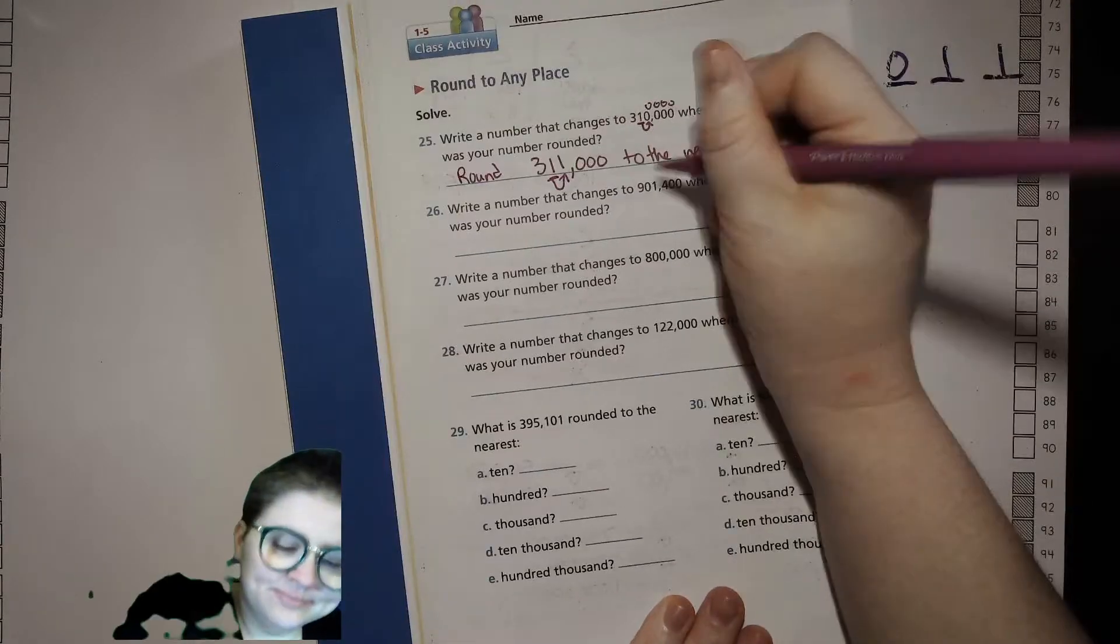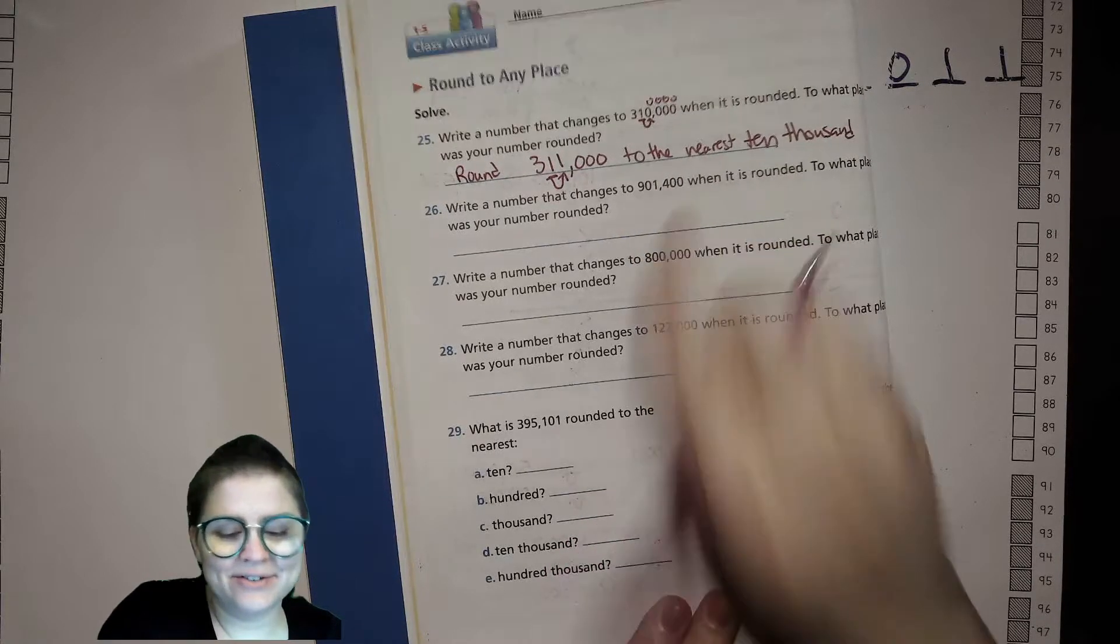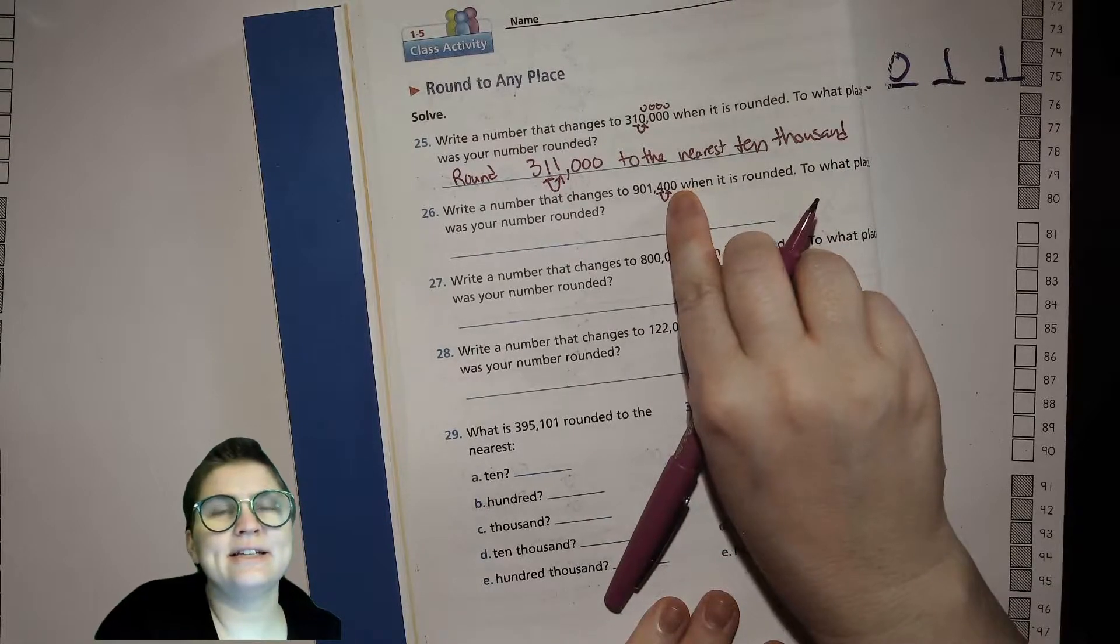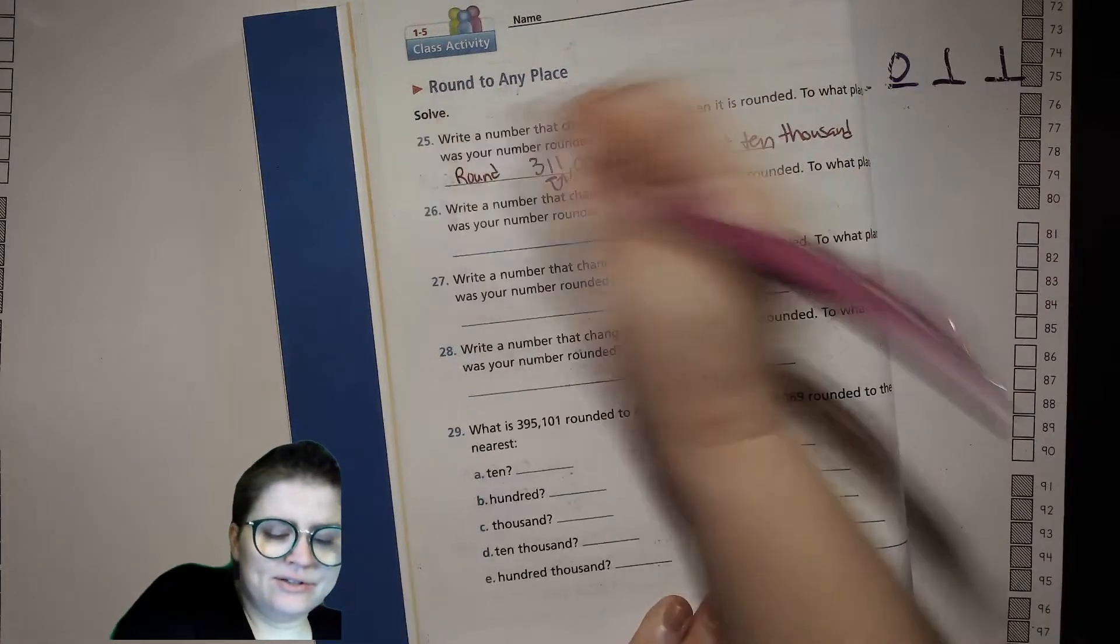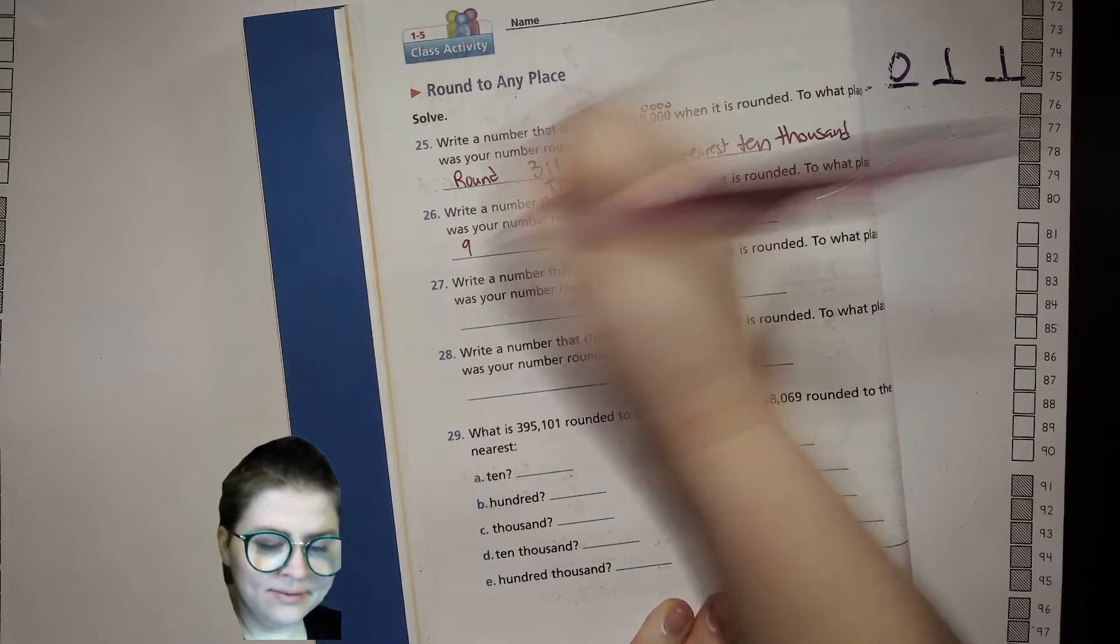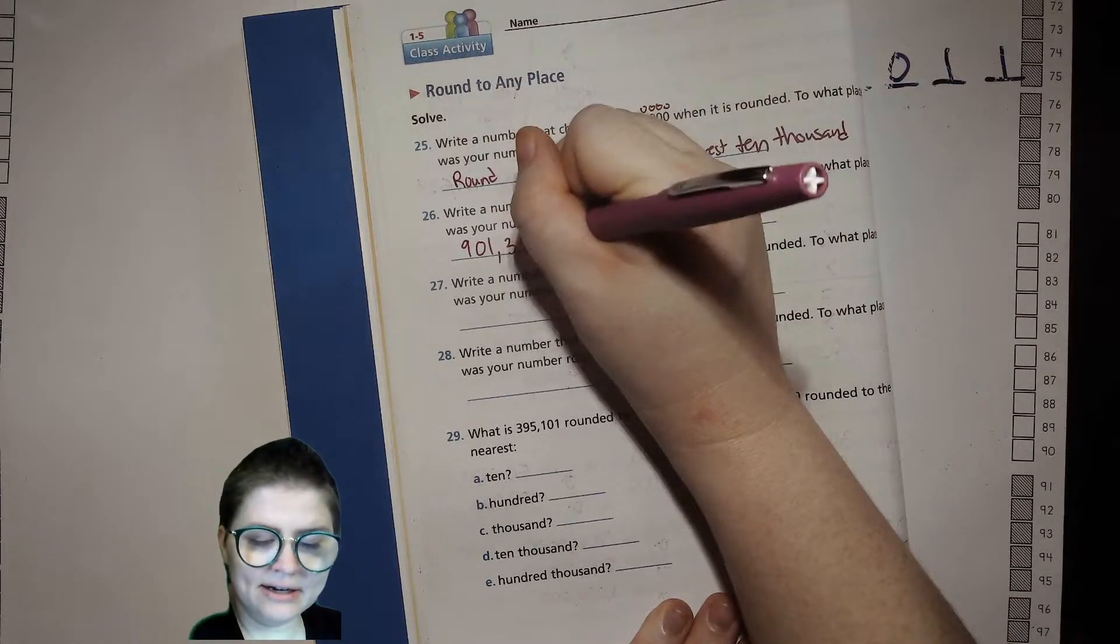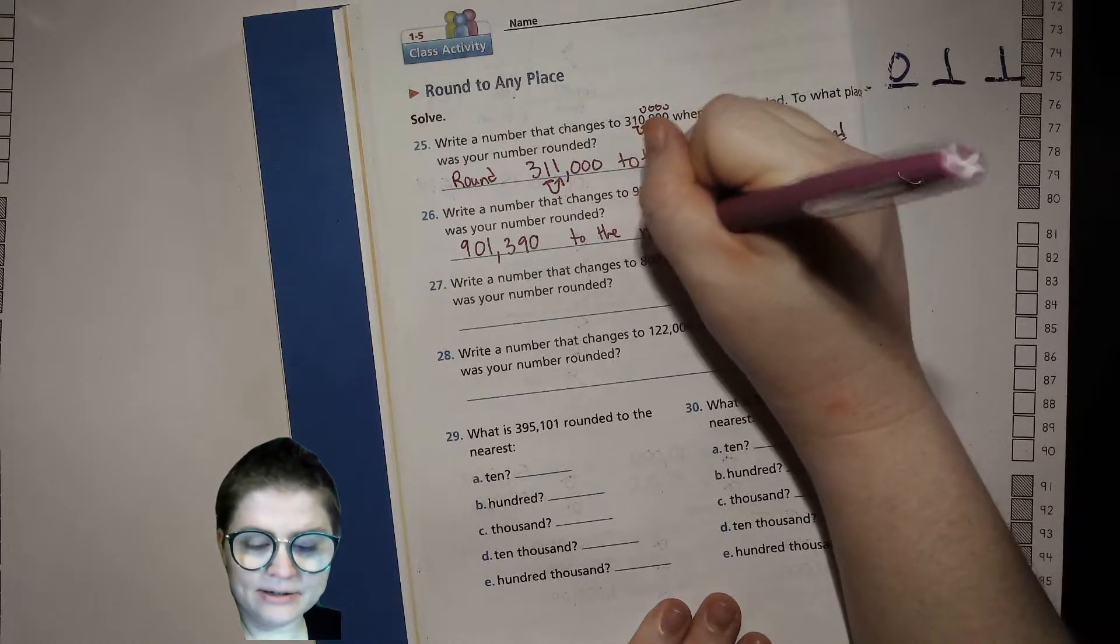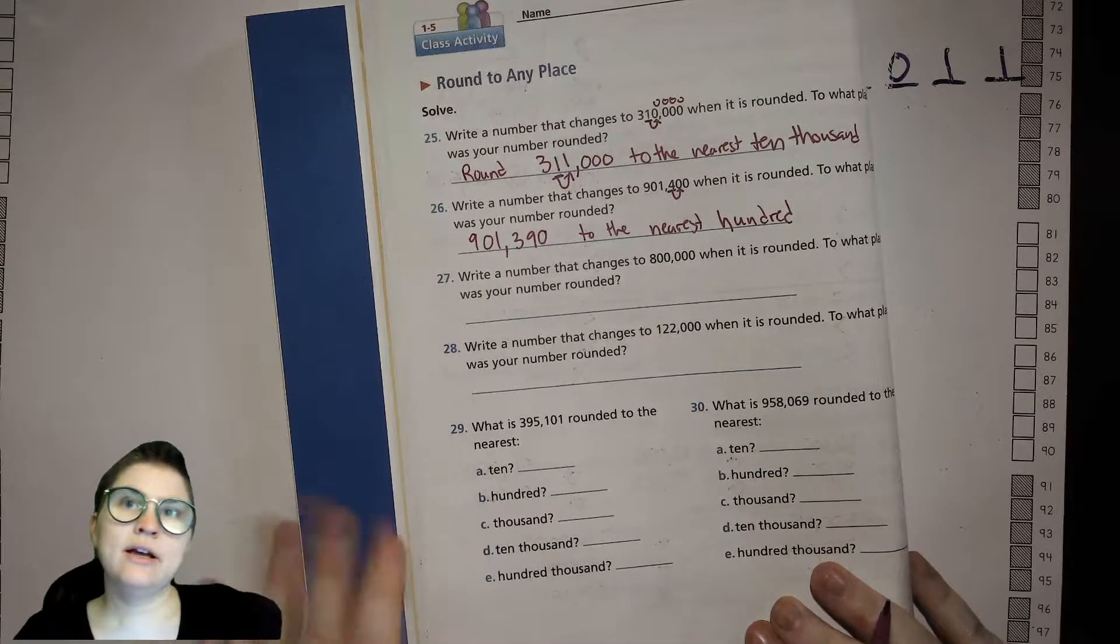By rounding that to the nearest 10,000, I looked here, they peaked over there, and they're like, oh, that's 4 or less. We have to let it rest, right? Instead of going up to 320,000. Write a number that changes to 901,400 when it is rounded. So, we're looking here. Right? So, something in this had to leave it at the 400. So, that could be... And that's the 100's place. So, let's do it the other way. Let's have it be something that rounded up. So, if we do 901,390 to the nearest 100. Right? Because that's the 100 where it is.